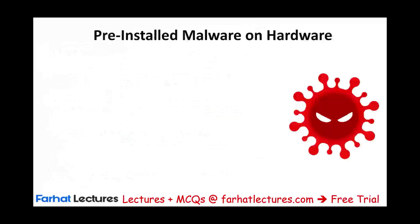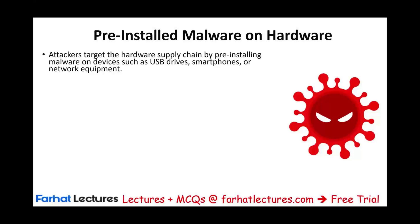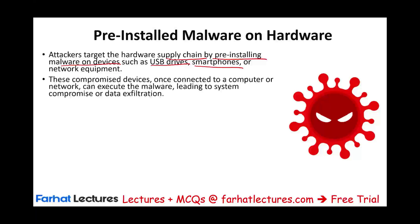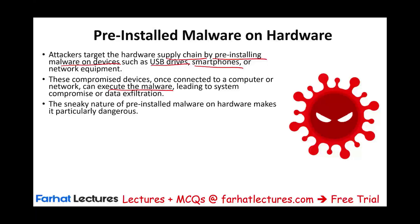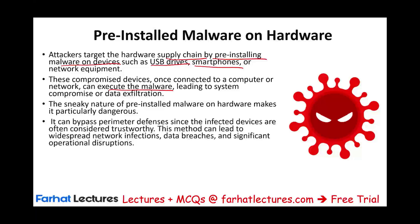Pre-installed malware on hardware is another method. Attackers target the hardware supply chain by pre-installing malware on devices such as USB drives, smartphones, or network equipment. Once these compromised devices are connected to the company's computer or network, they execute the malware, leaving the system compromised and enabling data exfiltration. If you cannot get to the software, get to the hardware. This sneaky nature makes it dangerous because the company is unaware and it bypasses perimeter defenses since infected devices are considered trustworthy, potentially leading to widespread network infection, data breaches, and significant operational disruption.